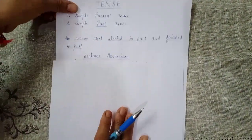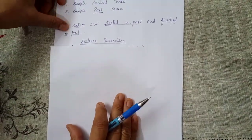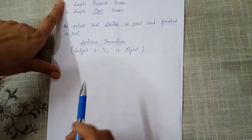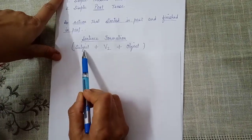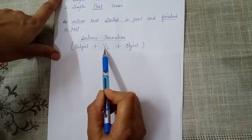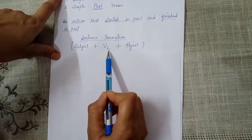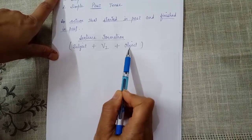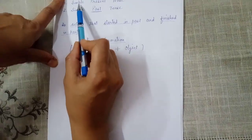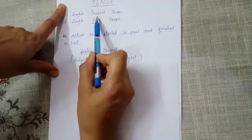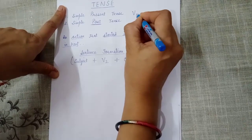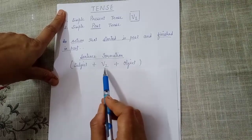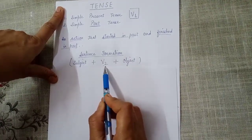Simple past tense has a sentence formation of its own kind. The rule is: Subject, then the second form of the verb — or you can say past form of the verb — and then comes the object. In our previous tense, simple present tense, we were using the first form of the verb. Here we are going to use the past form of the verb, or the second form of the verb.